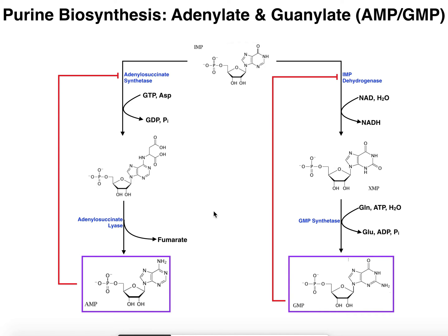As we get into nucleotide biosynthesis for both purines and pyrimidines, comparing the two primary purines AMP and GMP, the body is going to want to balance those as much as possible. If the levels of G start to rise too much, you need to stop making G and make more A. Likewise, if you're making too much A, you need to stop making as much A and make more G. AMP, if it builds up in the cell, can feed back and allosterically inhibit adenylosuccinate synthetase. If you've got too much AMP and it inhibits this enzyme, then IMP will go towards the other side to make more GMP to balance it out.